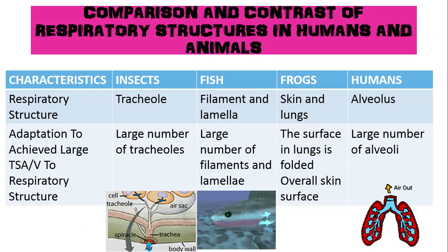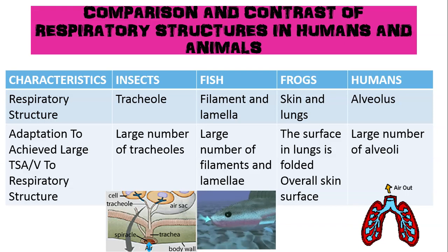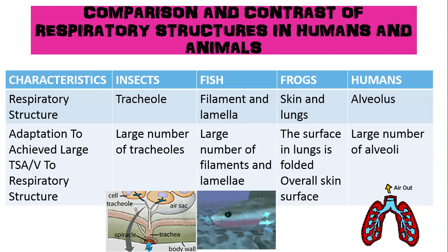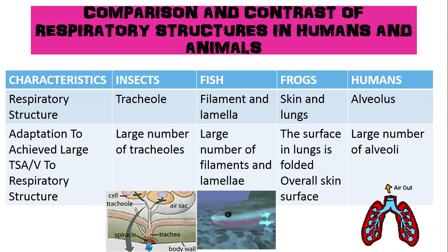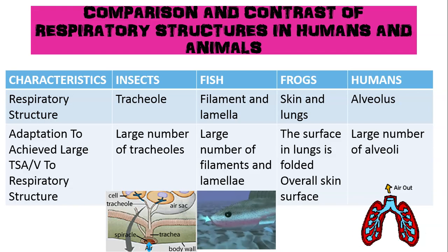Here is a summary of the differences between respiratory structures in humans and animals. The respiratory structure in insects uses the tracheal system; fish use filaments and lamellae; frogs use the skin and lungs; and humans use alveoli. For adaptation to achieve a large total surface area for gas exchange: insects have a large number of tracheoles; fish have a large number of filaments and lamellae; frogs have a folded lung surface and overall skin surface; and humans have a large number of alveoli.